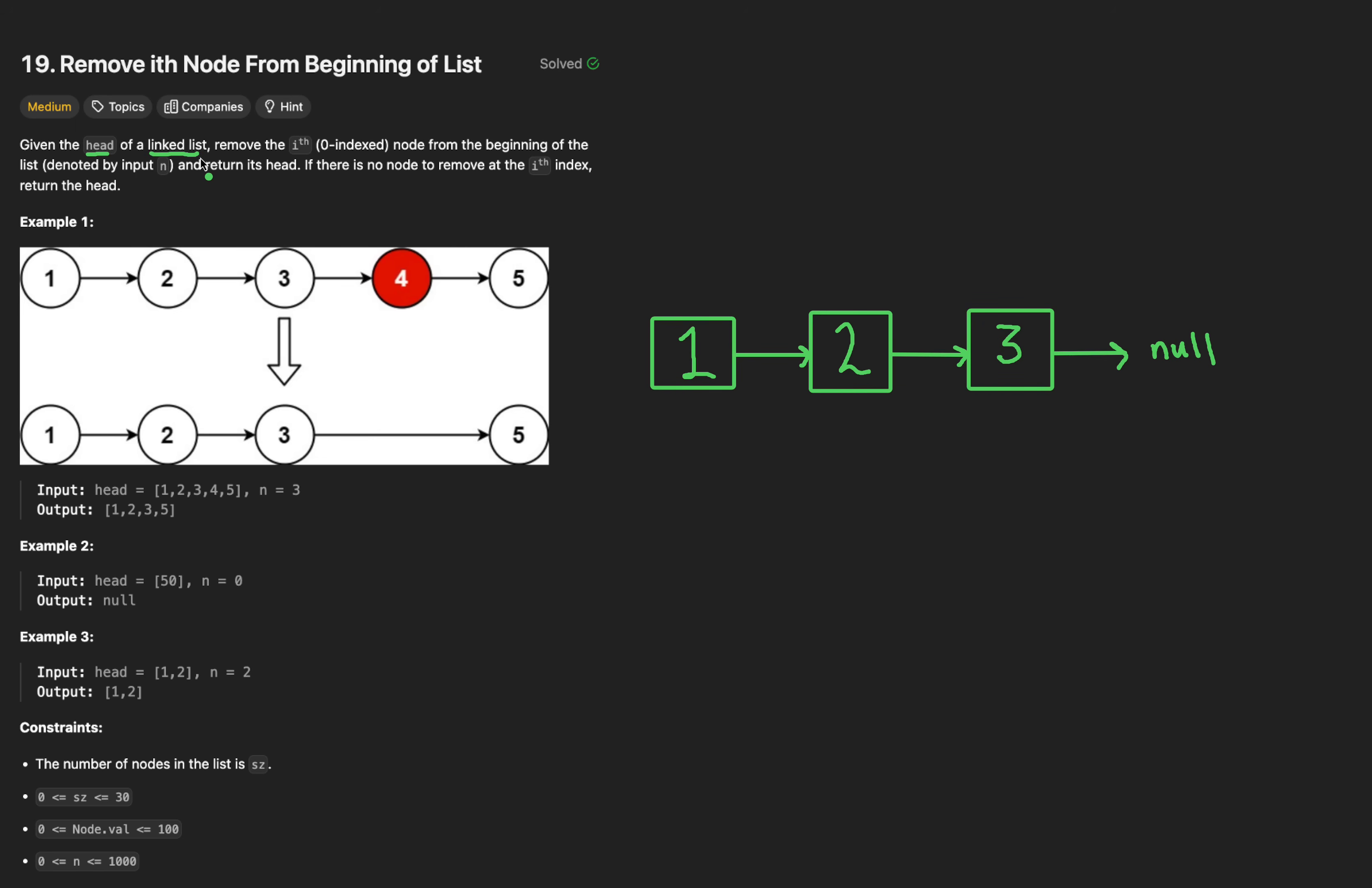Given the head of a linked list, we want to remove the ith node from the beginning of the list, denoted by input n, and ultimately will return its head. If there is no node to remove at the ith index, return the head. Overall this is a huge relief. Unlike the OG problem, we're tasked to remove the ith node from the beginning.